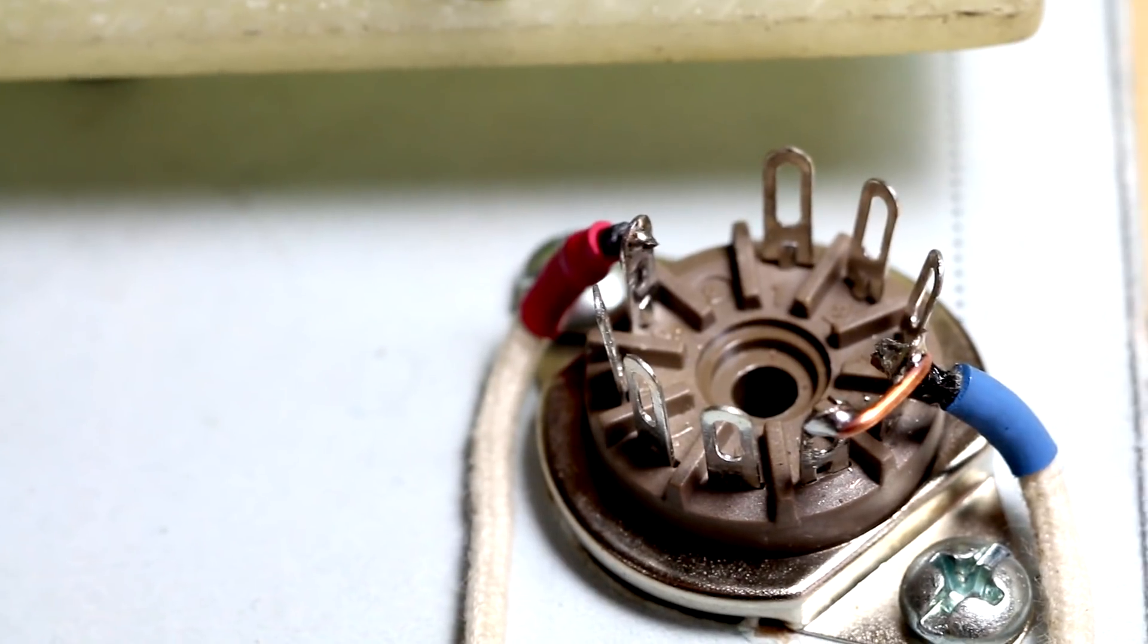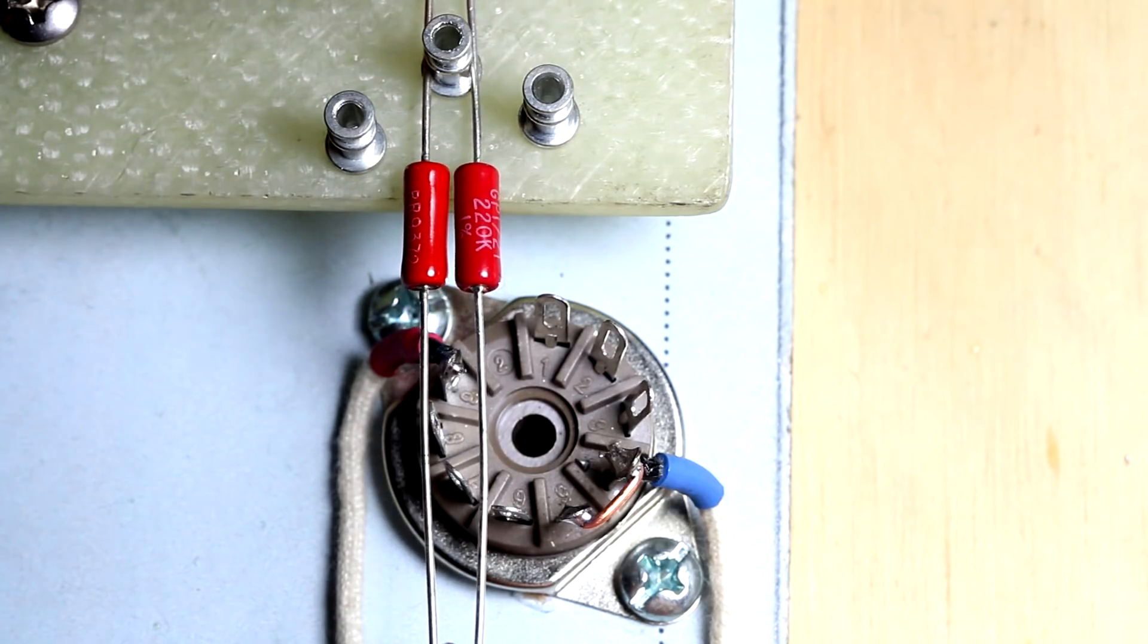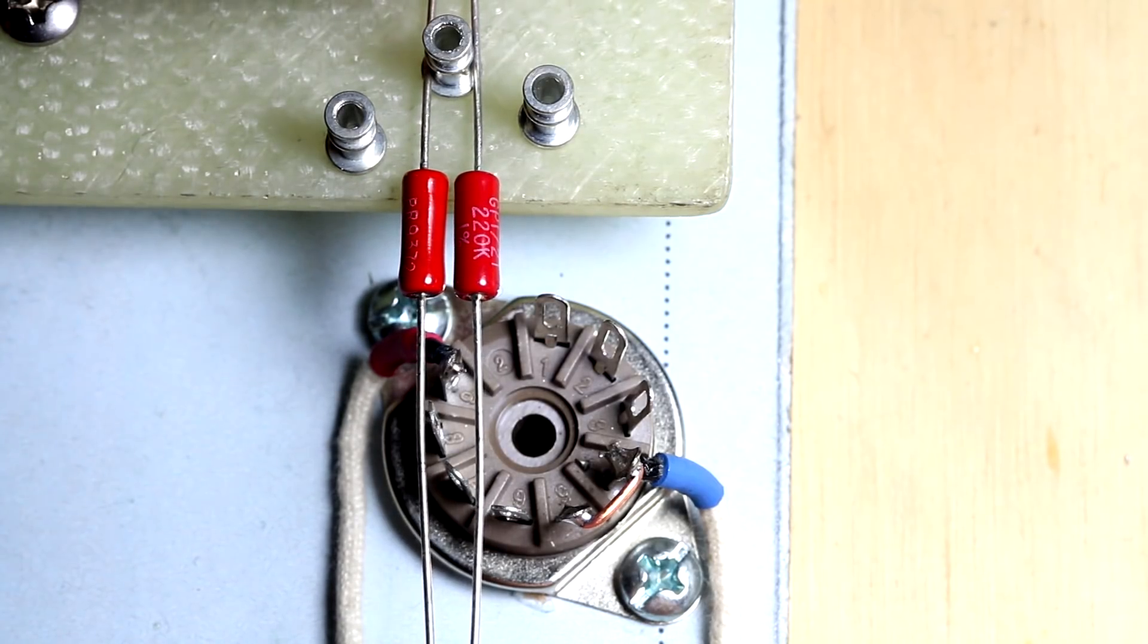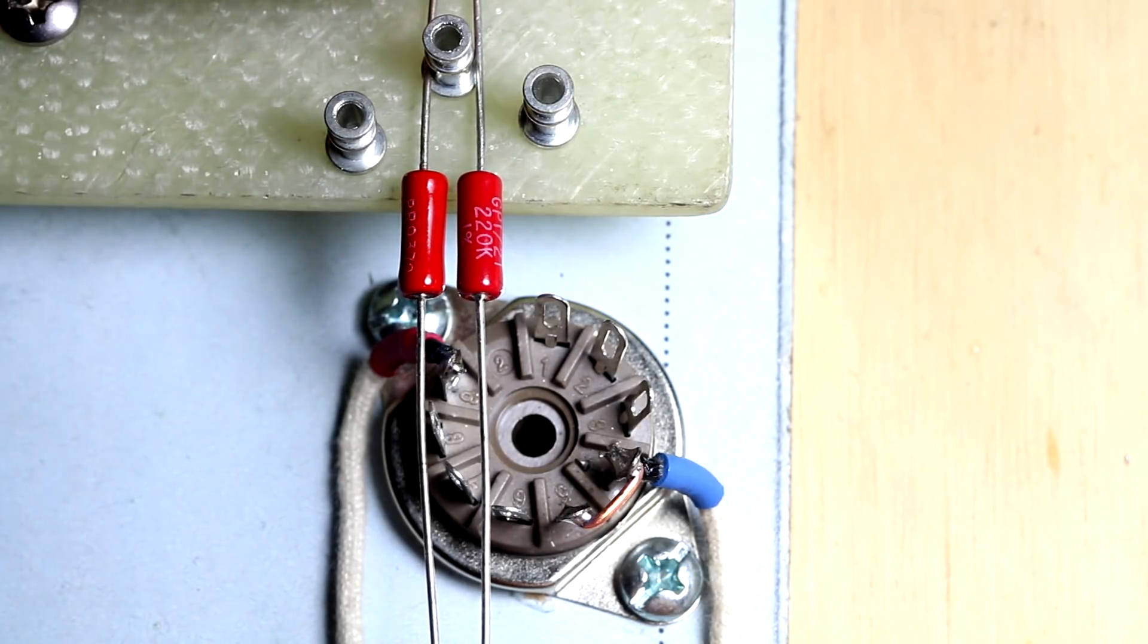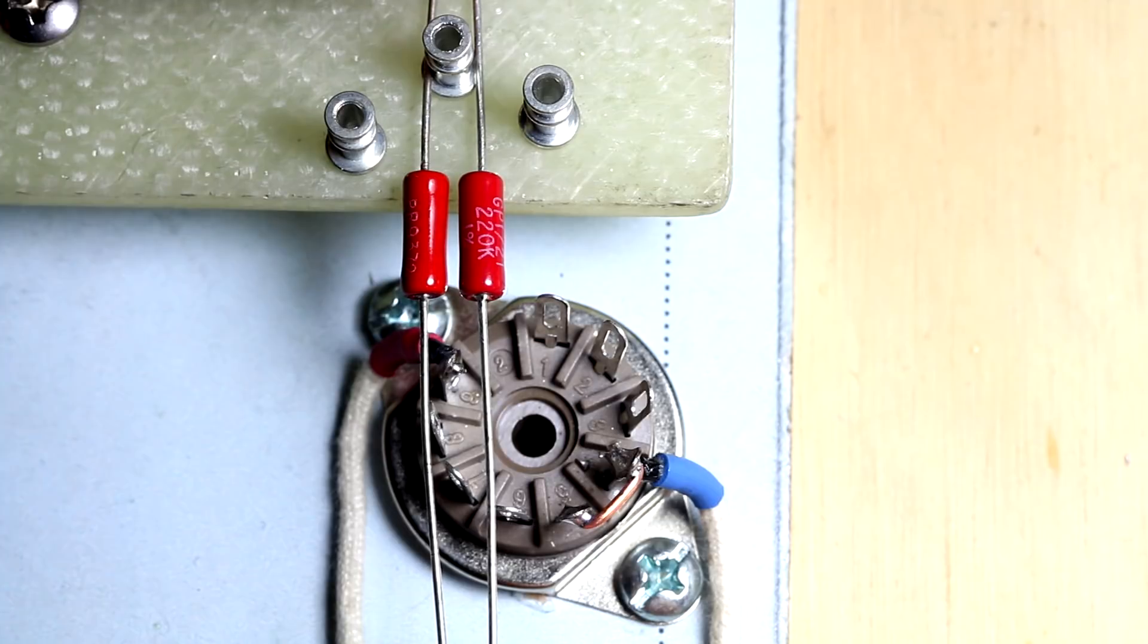All right, the first two resistors we're going to do are R3 and R4 and they go to pins one and pins six, which are the plates.